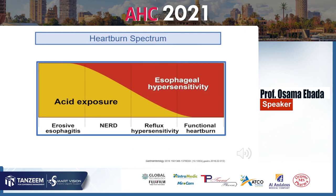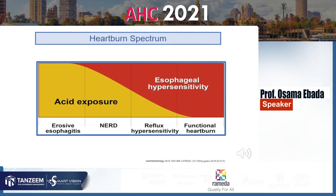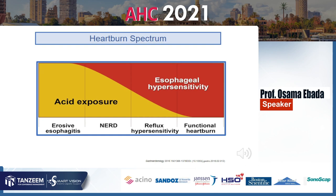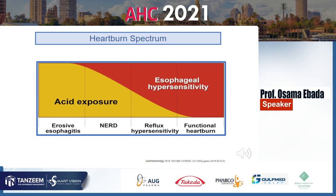There is a heartburn spectrum: very high acid exposure gives erosive esophagitis; more acid with some esophageal hypersensitivity gives NERD; more esophageal hypersensitivity with less acid gives reflux hypersensitivity; and total esophageal hypersensitivity with no acid excess gives functional heartburn.